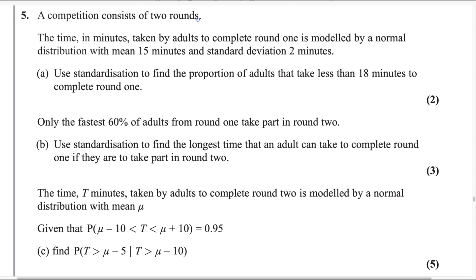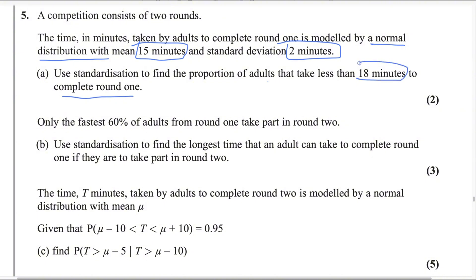A competition consists of two rounds. The time in minutes taken by adults to complete round one is modeled by a normal distribution with mean 15 minutes and standard deviation 2 minutes. Use standardization to find the proportion of adults that take less than 18 minutes to complete round one. Students taking less than 18 minutes will qualify for the next round, so we need to find P(X < 18).